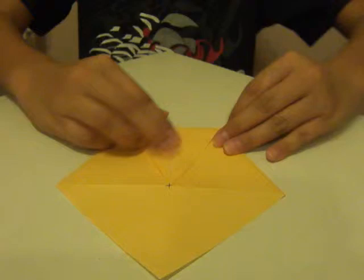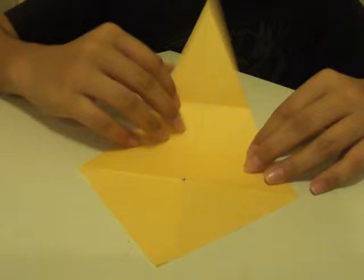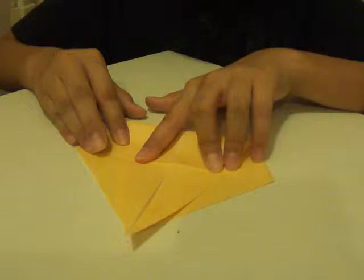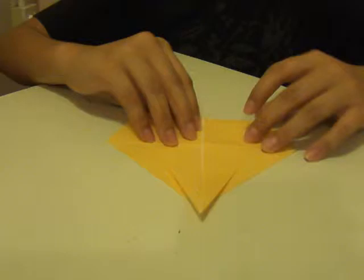Take this line here, align it with this line. Align it with this line and crease. So the model should look like this after you align it and crease. Unfold.